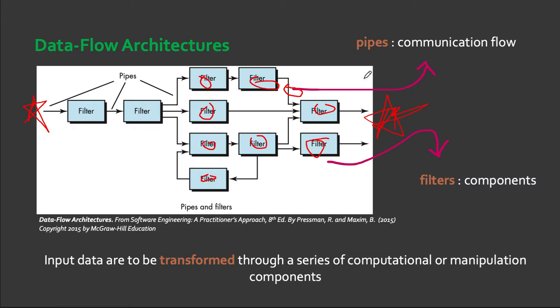Each filter works on its own without any interference from the other components. It is designed to expect data input of a certain form and produces a data output to the next filter of a specified form. However, the filter does not require knowledge of the workings of the neighboring filters — it will not interfere with other components. That is the data flow architecture.